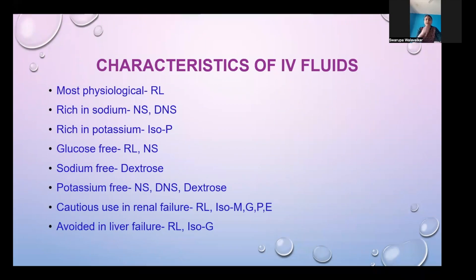Regarding the characteristics of IV fluids: the most physiological are Ringer's Lactate (RL), Normal Saline (NS), and DNS — these are rich in sodium. Isolyte P is rich in potassium. RL and NS are glucose-free; dextrose is sodium-free; NS, DNS, and dextrose are potassium-free. In renal failure, RL and isolytes should be used cautiously, and RL and Isolyte G should be avoided in liver failure.